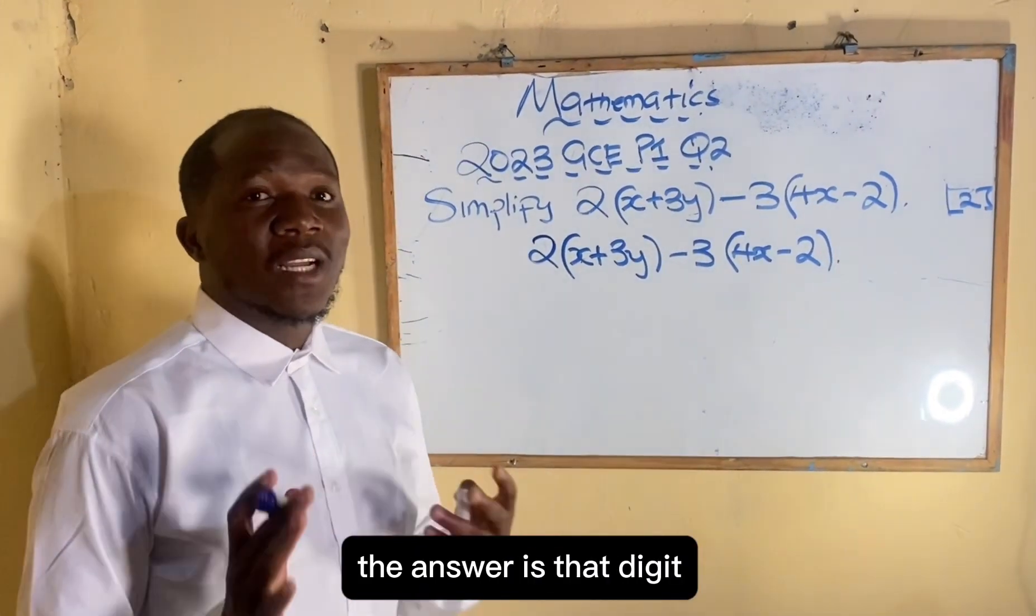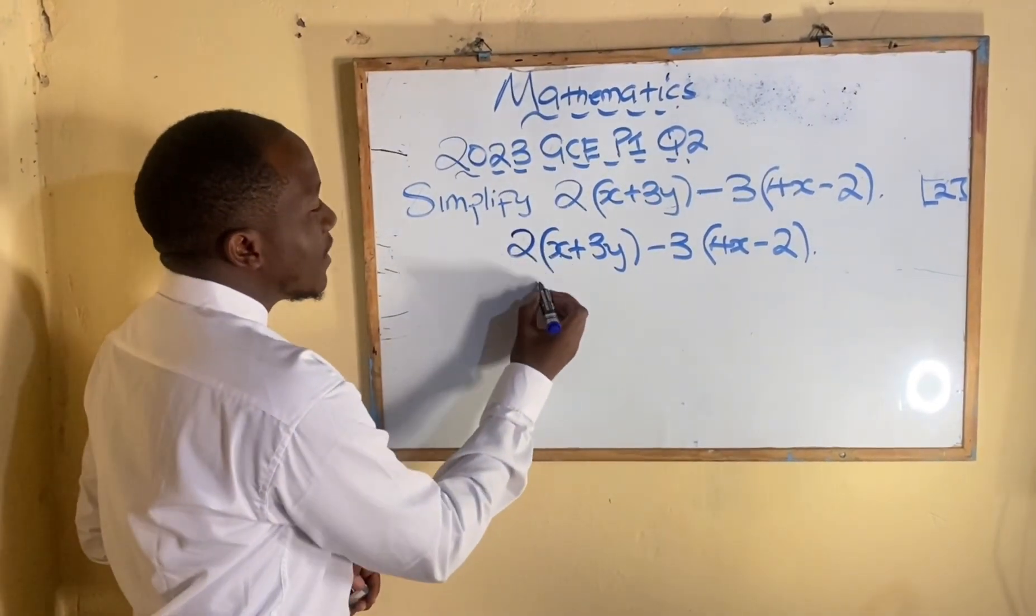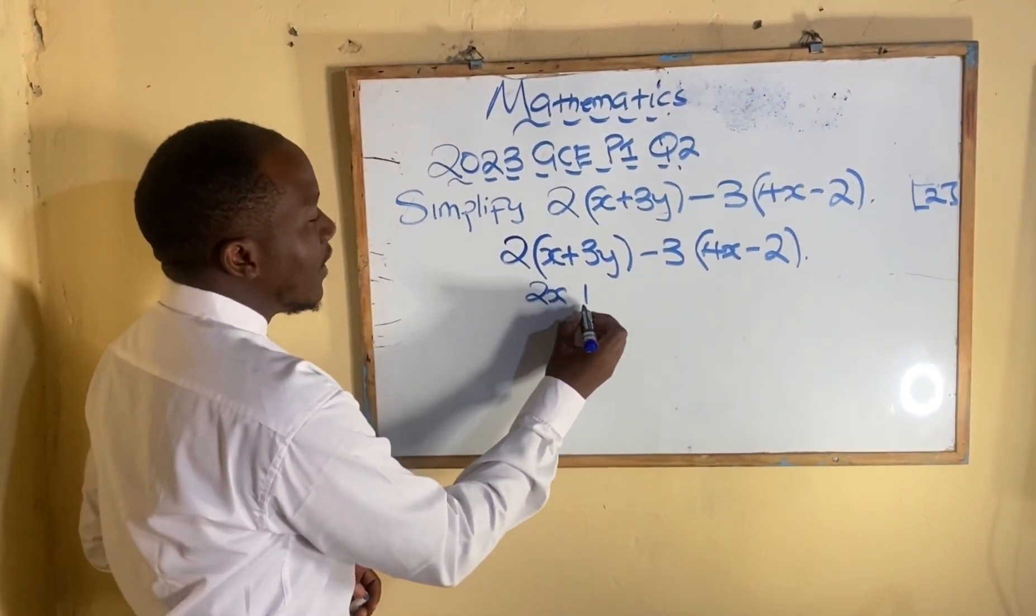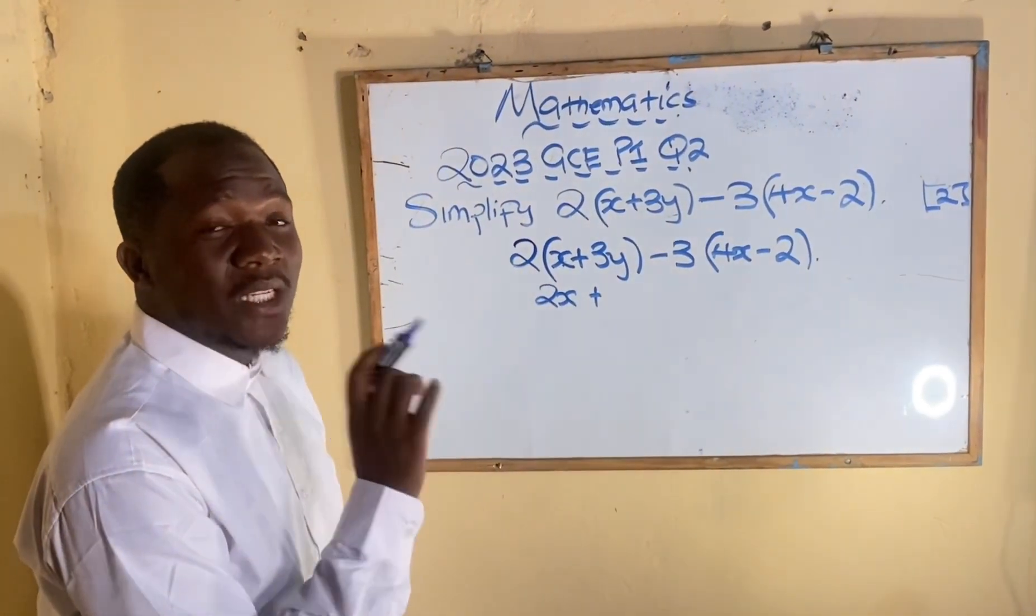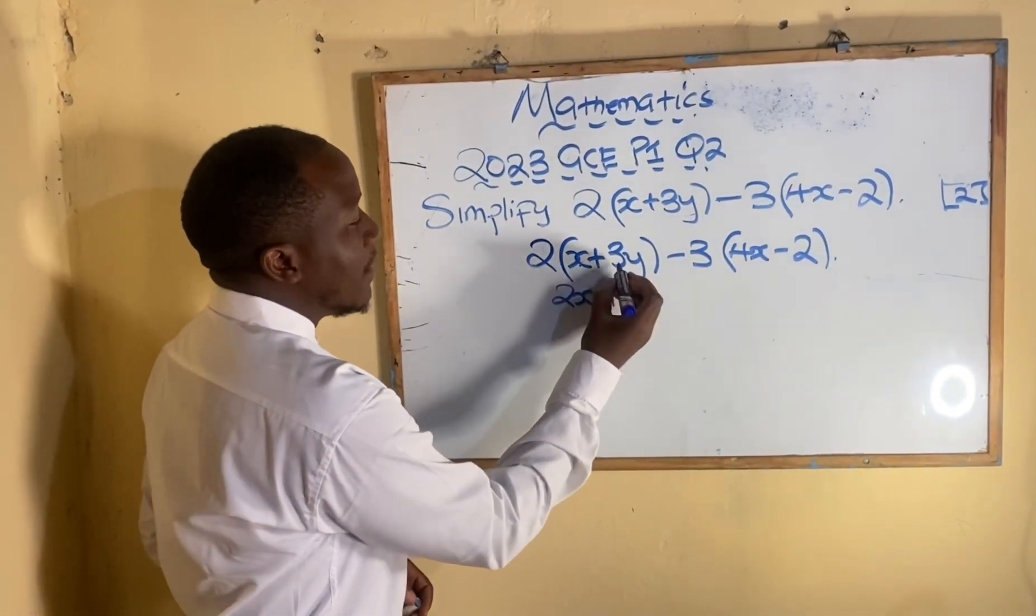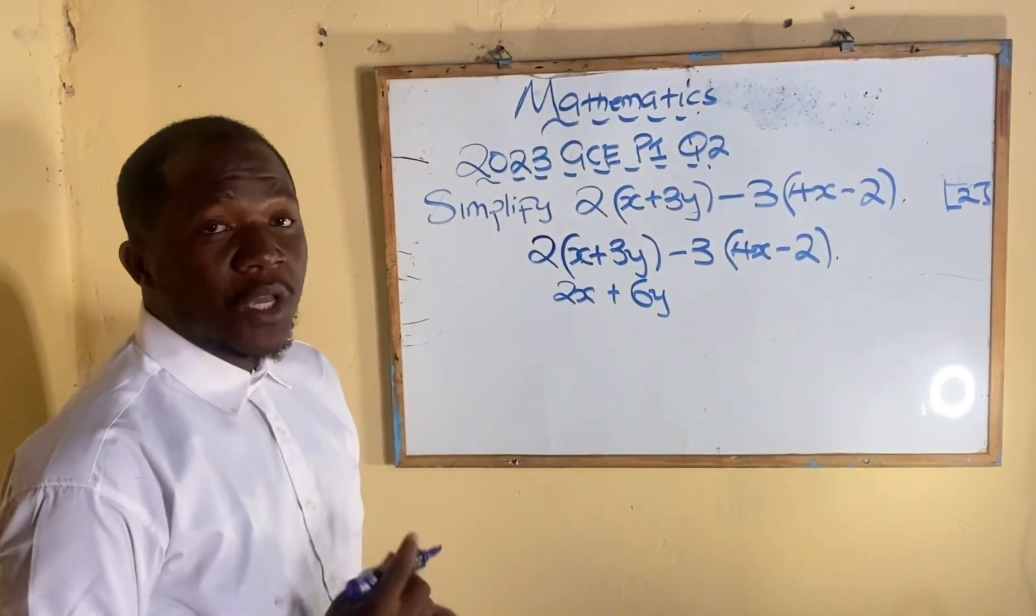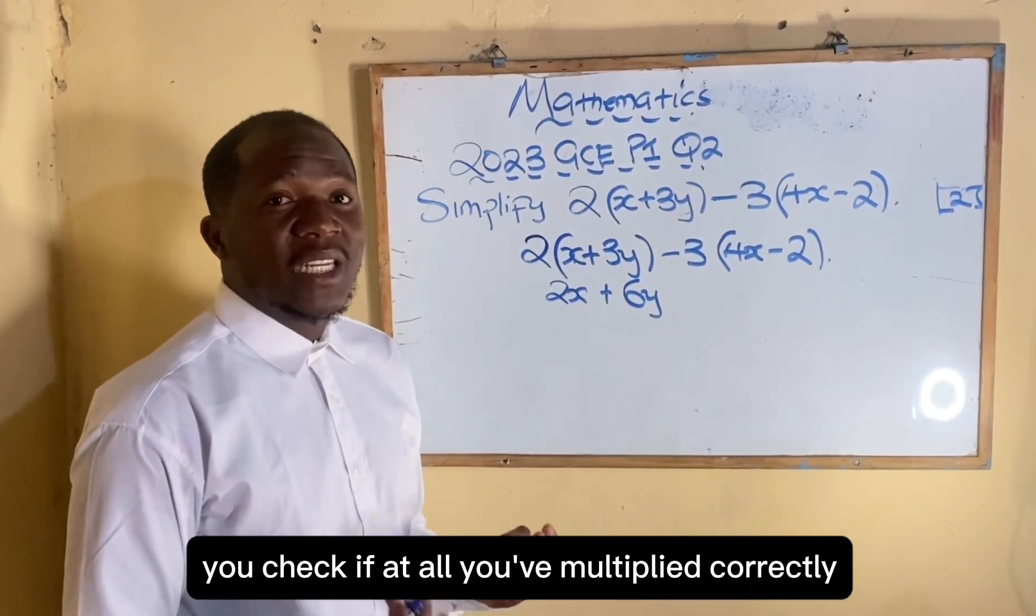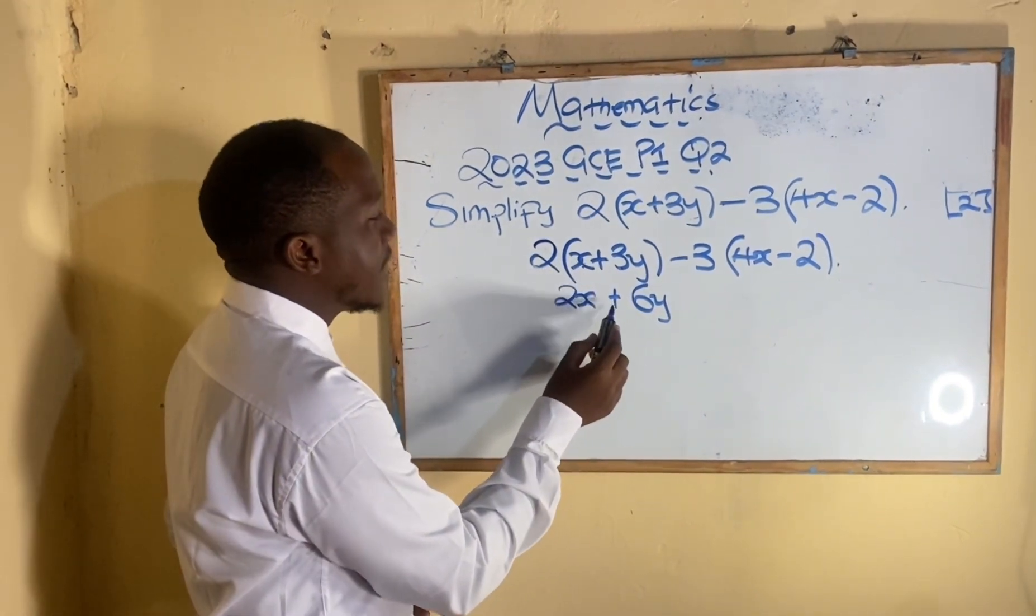So I'm going to say 2 times x. When a digit is multiplied by a variable, the answer is that digit together with a variable combined, so 2 times x is 2x. And then plus, do not forget 3y is also part of what is in the bracket, hence it should also be multiplied with 2. So 2 times 3 is going to give us 6 together with y. You check if you've multiplied correctly, so you say 2 times x is 2x plus 2 times 3 is 6y.